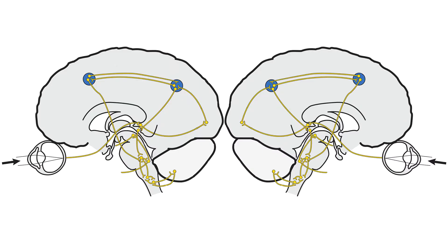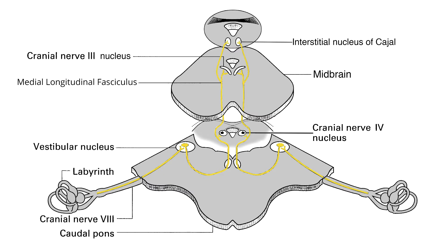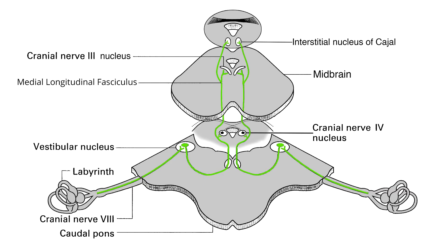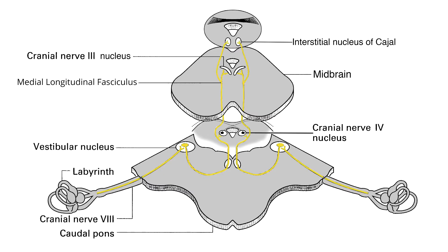Damage to these vertical saccadic pathways can occur in many places. A lesion in the cerebral gaze centers or their descending pathways in both cerebral hemispheres produces impaired upward and downward vertical saccades. But because the brainstem vestibuloocular reflex pathway is intact, the patient's eyes move opposite to the direction of head movement in the oculocephalic maneuver. This impairment of volitional eye movements with sparing of vestibuloocular eye movements is called a vertical supranuclear gaze palsy.